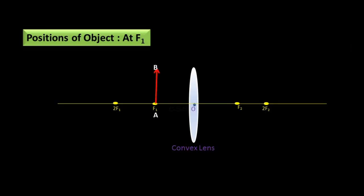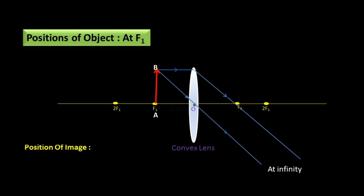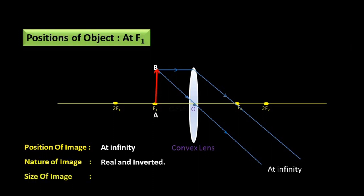Another position — object at F1. AB is the object at F1. The incident ray is parallel to the principal axis and passes through focus F2 as per rule. Another incident ray passes through the optical center without any deviation. These two refracted rays are parallel to each other, so the image forms at infinity. Position of image: at infinity. Nature of image: real and inverted. Size of image: highly magnified.